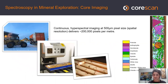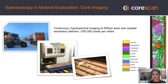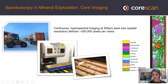The next scale up — or down depending on which way you look at it — would be looking at hyperspectral core imaging. This is a more recent innovation. The CoreScan system images at 500 micron pixels and delivers approximately 200,000 pixels per meter. Instead of just getting a single point giving you maybe one to two minerals, you start to see a whole slew of minerals and a map of their distribution and spatial relationships to each other.